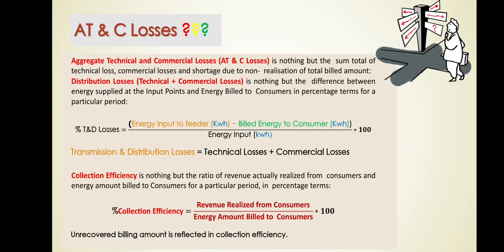That 50% includes technical losses as well as non-technical losses — for example, when consumers refuse to pay or engage in malpractices such as power theft. So total losses are made up of technical losses and non-technical losses together, which form the AT&C loss. We are going to discuss this and eliminate these losses so that revenue recovery increases — that is the main objective behind energy conservation thinking around AT&C losses.